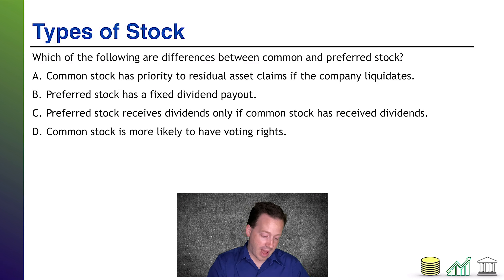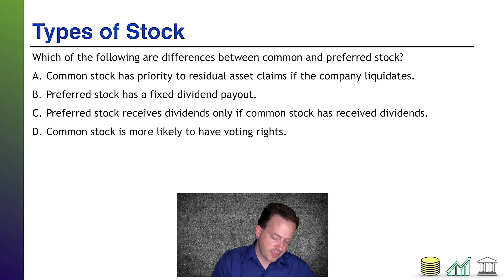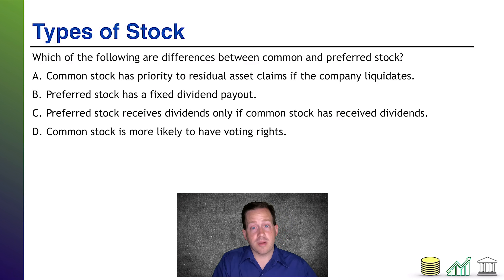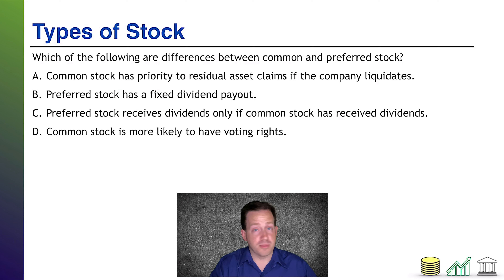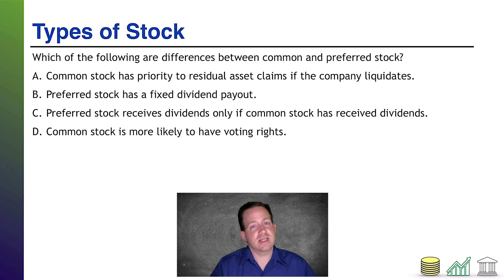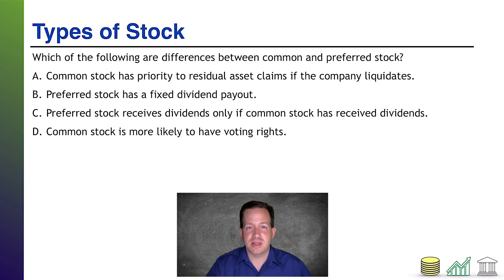Welcome back. Which of the following are differences between common and preferred stock? Option A: common stock has priority to residual asset claims if the company liquidates. It does not. Common stock is at the bottom of the totem pole in terms of claims to residual value. They do have a claim, but it's not a priority claim — they're at the bottom of the barrel. Preferred stock is one notch above the common stockholders.